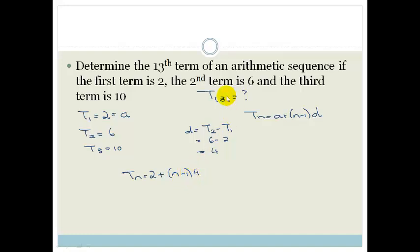But now they've asked us for T13. So we want T13. So wherever we see n, we're putting 13. T13 = 2 + (13-1) times 4, which is 2 plus 12 times by 4.